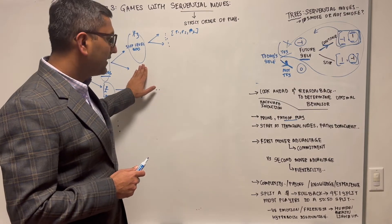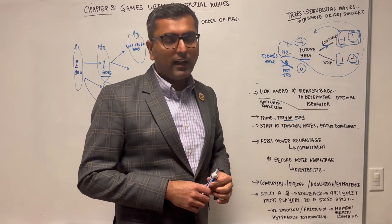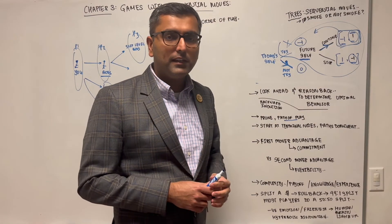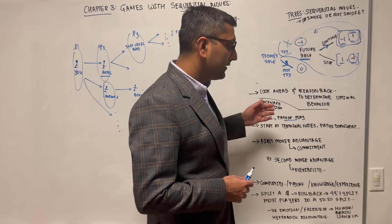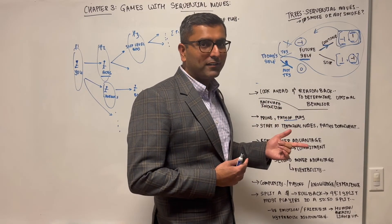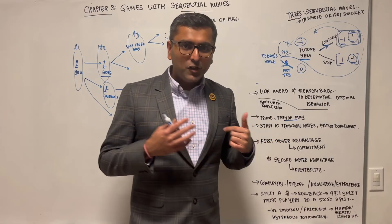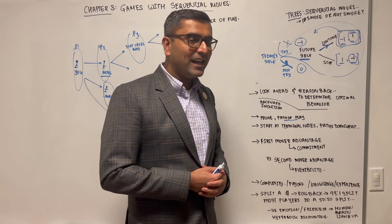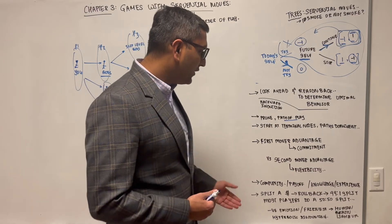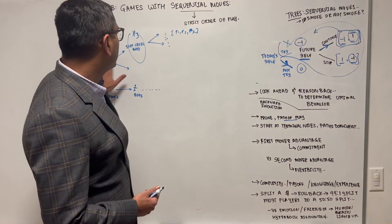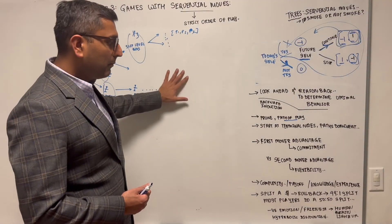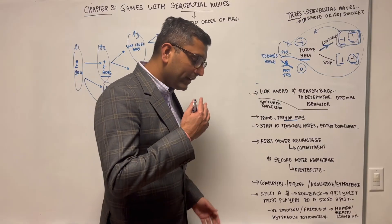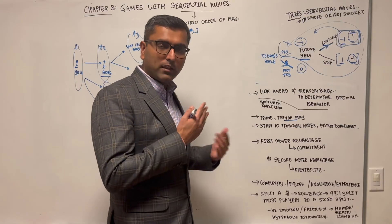One big assumption is that people behave rationally. But you'll quickly realize that even in a simple game — like splitting $100 with someone — backward induction says give them $1 and keep $99, but most people give $50 out of fairness. Human beings have issues: fairness, procrastination, inaction, and miscalculation — all of which deviate from rational behavior at every step.